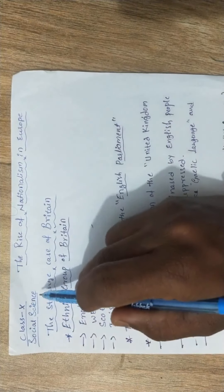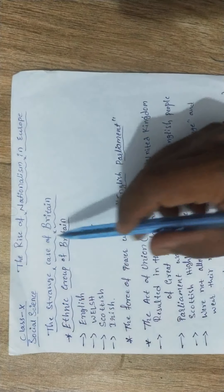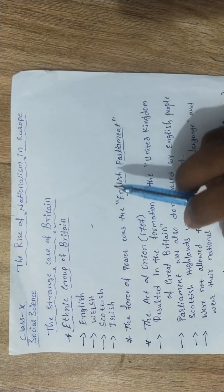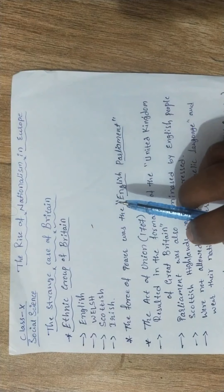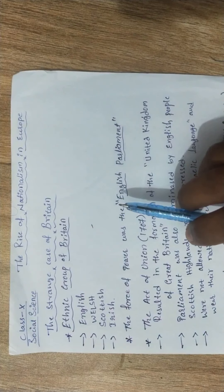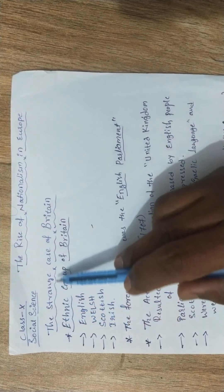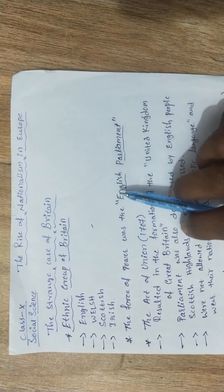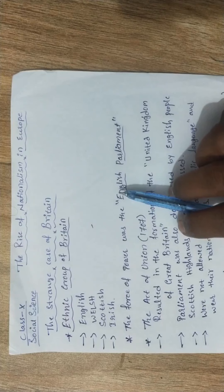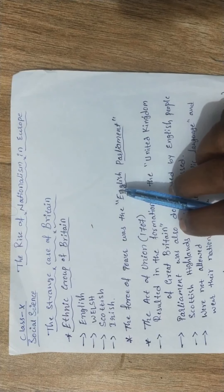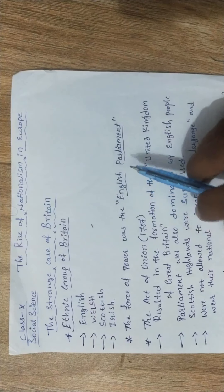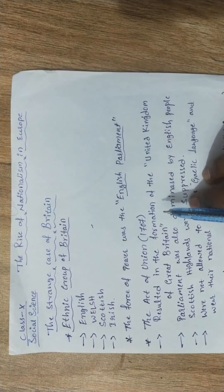Welcome to Class 10th Social Science. We were studying the Rise of Nationalism in Europe, and today's topic is the 'Strange Case of Britain' — meaning the unification of Britain, how Britain became a unified nation-state, and whose role was most important in that process.